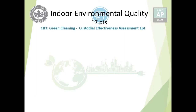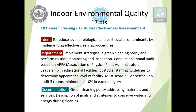Credit number 3 is Green Cleaning Custodial Effectiveness Assessment for one point, continuing from the Green Cleaning Policy prerequisite. The intent is to reduce contaminants by implementing effective cleaning procedures. The requirement is to perform routine monitoring and inspection based on guidelines from the Association of Physical Plant Administrators (APPA). The APPA guidelines determine the cleanliness appearance level of any facility, room, or office, and a score of 2.5 or better is required. You must audit a minimum of five rooms or 10% of rooms in each category, whichever is greater.